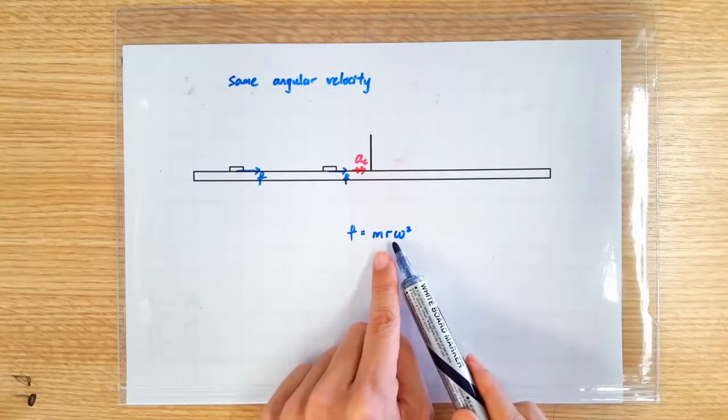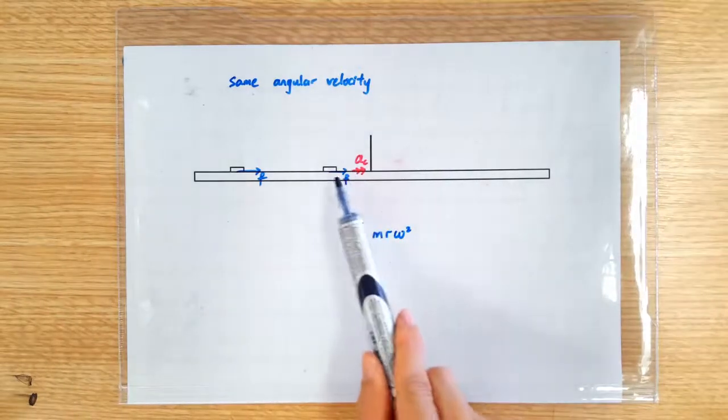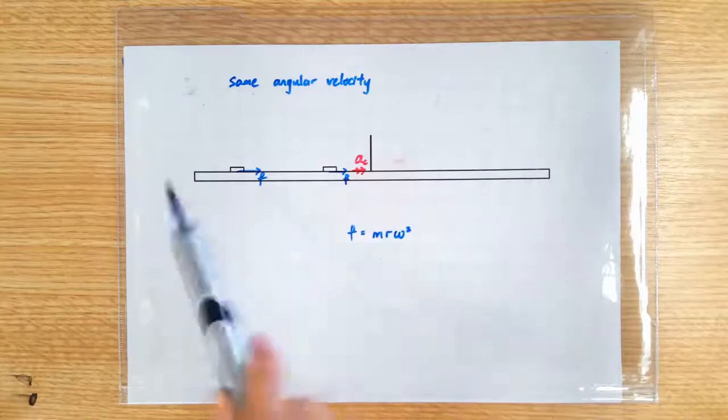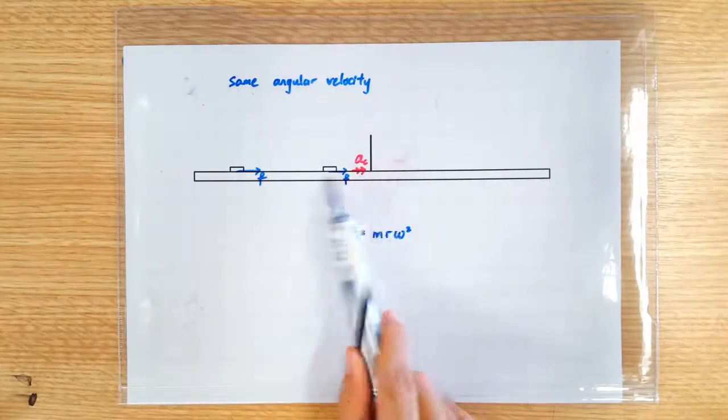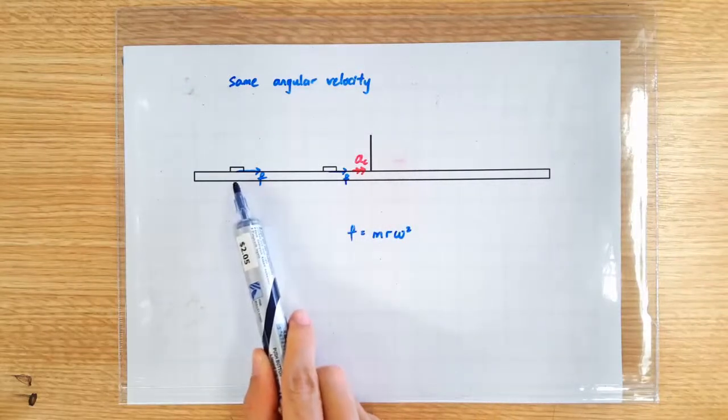So a larger radius implies a larger frictional force. This is because for the same omega, a larger r requires a larger centripetal force. So if we slowly increase the omega of the spinning disc, this guy is going to slip first.